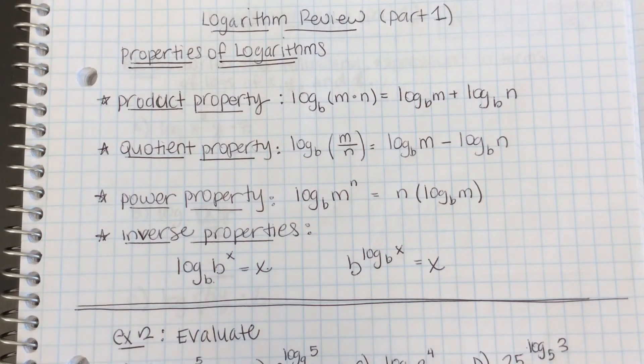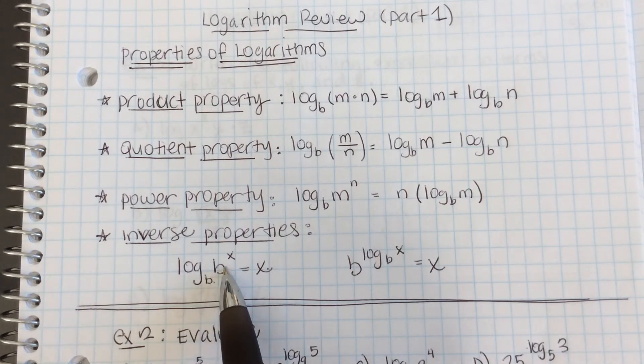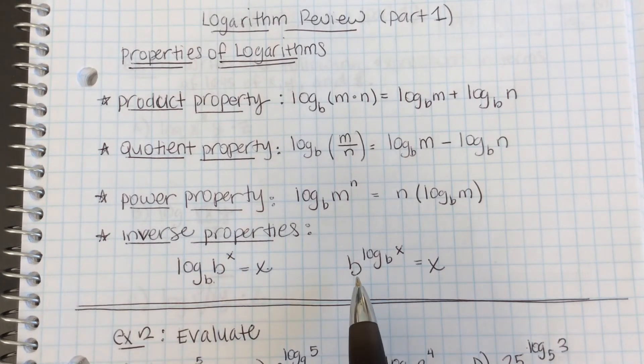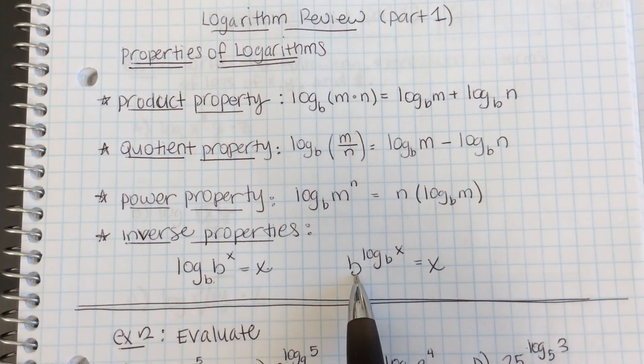Keeping in mind that logarithms and exponents are inverses of each other, log base b of b to the x will cancel itself out and leave just your answer x. The opposite is true when a base is raised to a log of the same base.